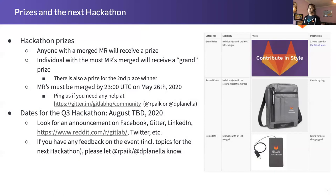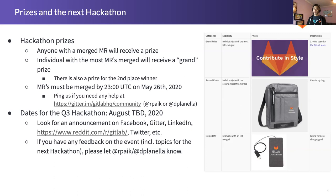Prizes and the next hackathon — just winding down in terms of the wrap-up. As a reminder, you see on the right the various prizes we have. We obviously have the traditional grand prize where you get to spend a hundred dollars at shop.gitlab.com, and a second place prize which is a crossbody bag. And then everyone who has MRs merged by the 26th gets a wireless charger. It looks pretty attractive, so hopefully you'll all enjoy it. The deadline for MRs to be merged is 2300 UTC on the 26th, which is Tuesday.